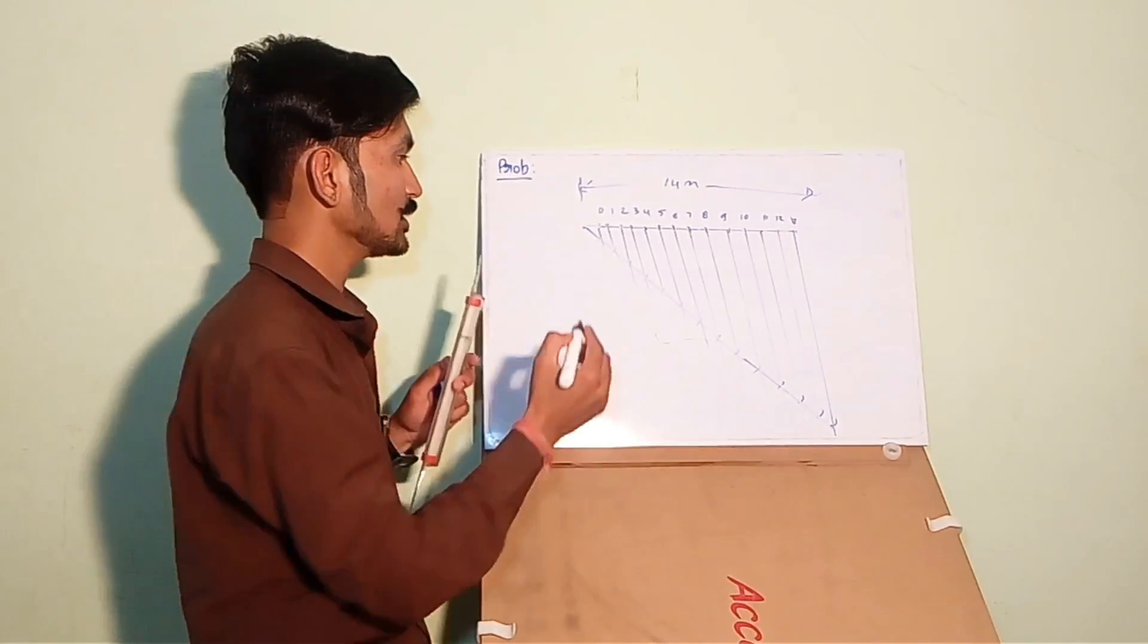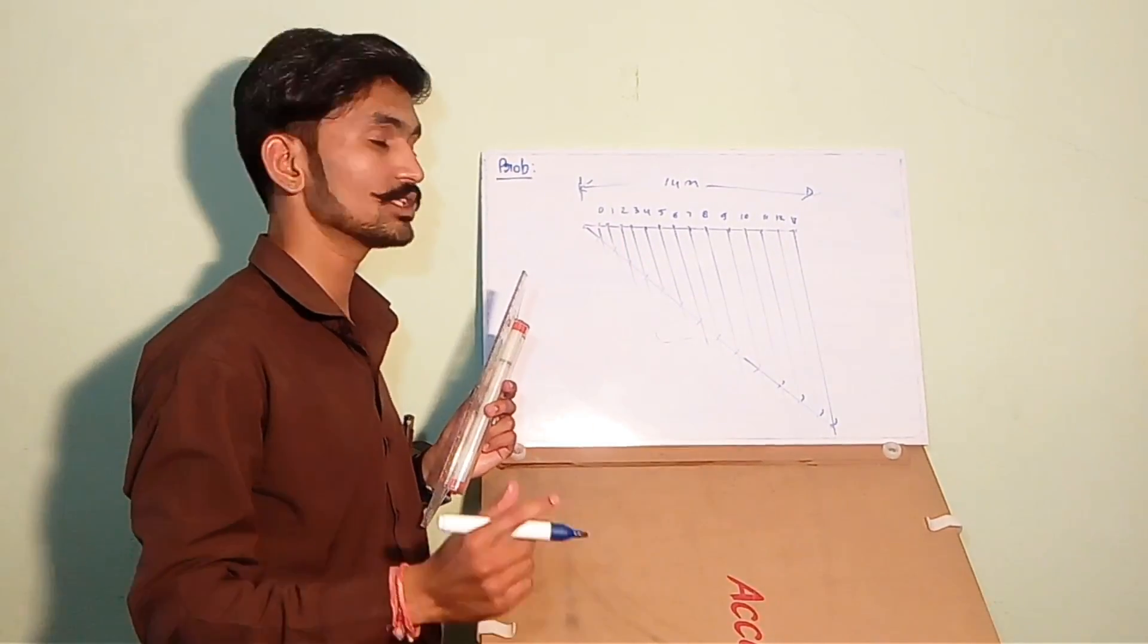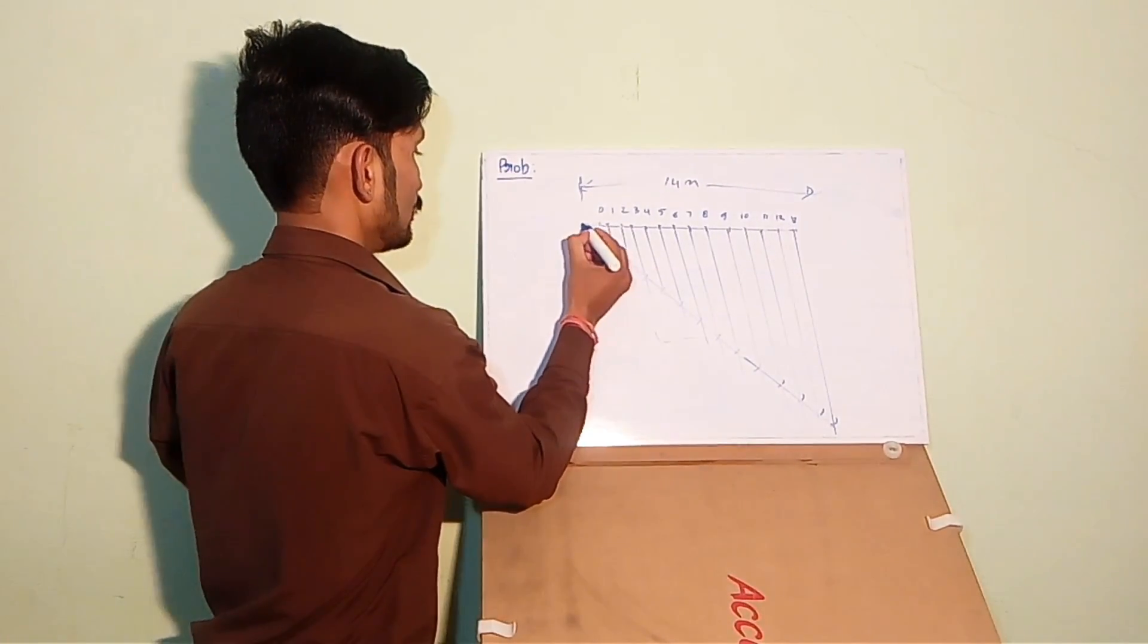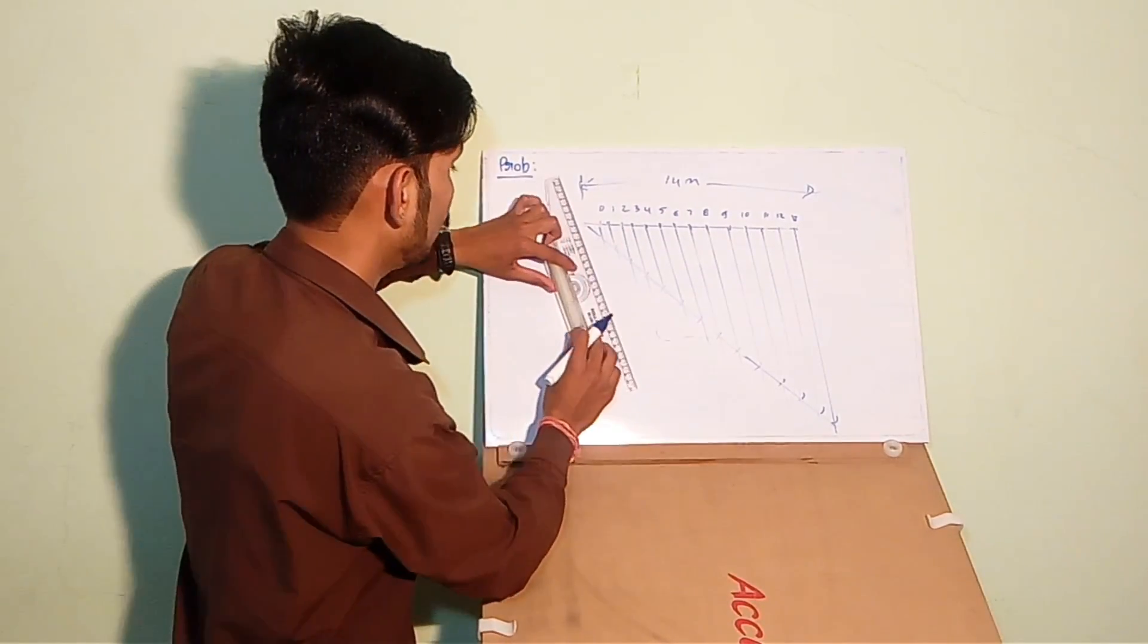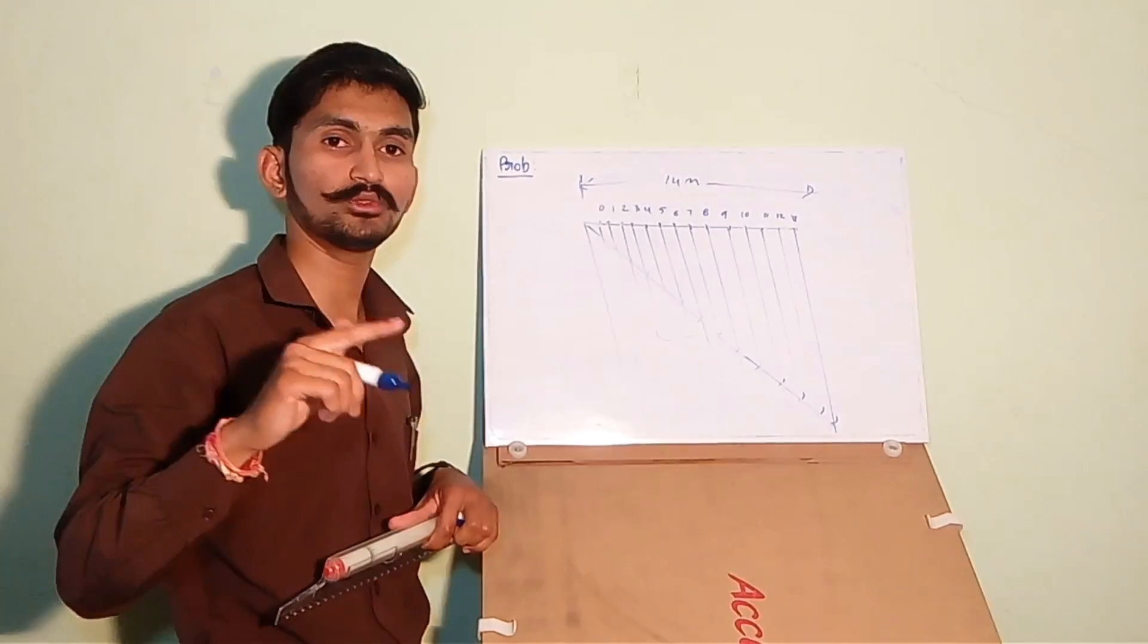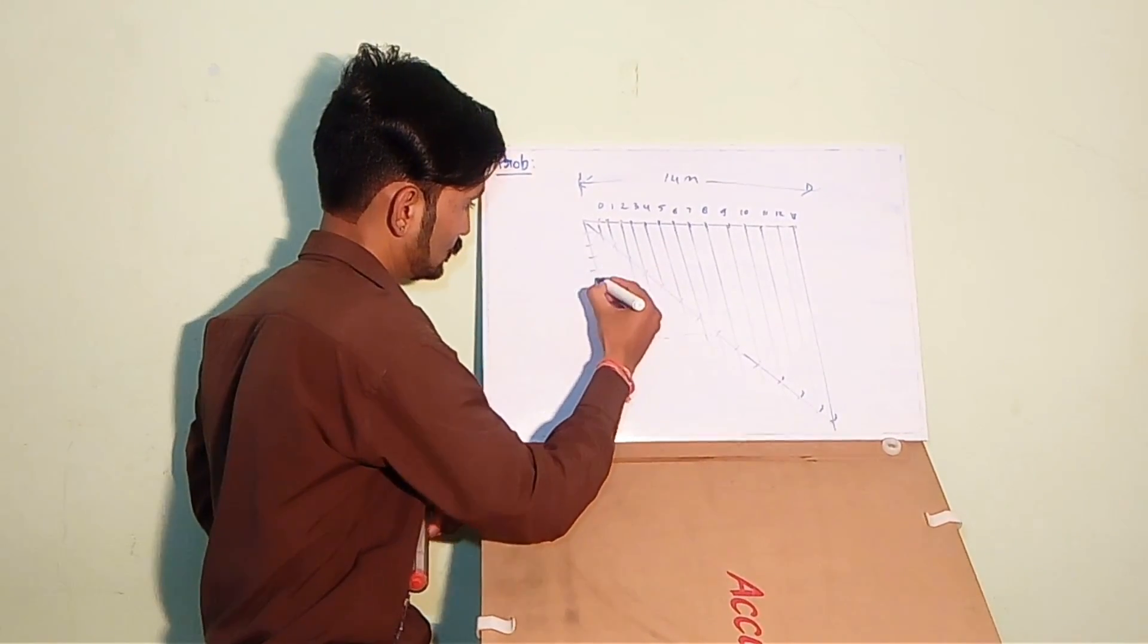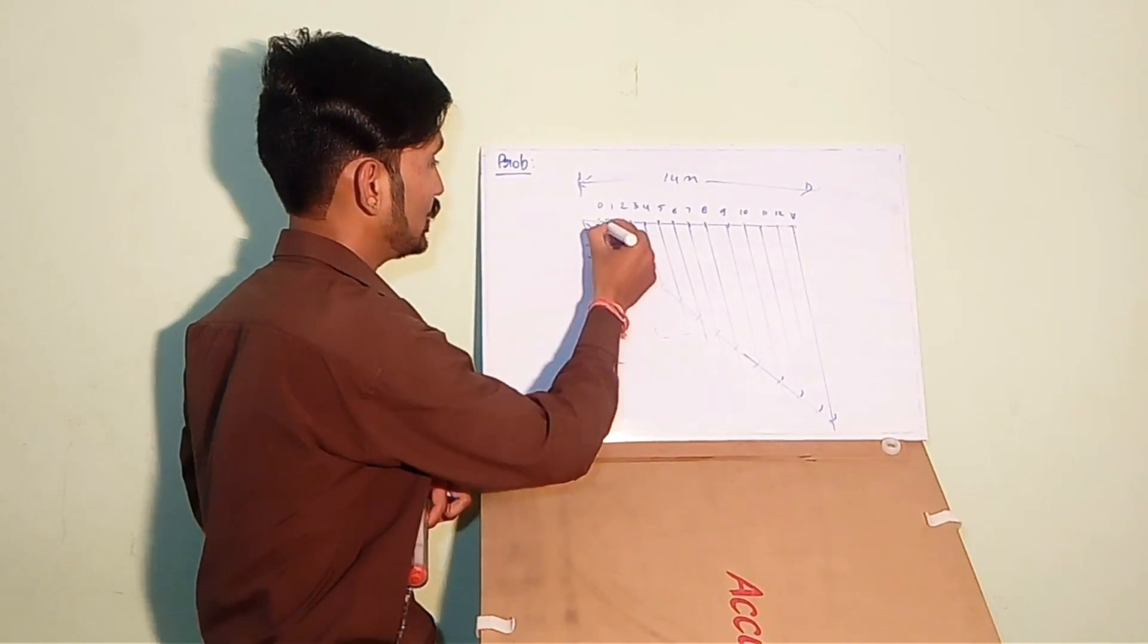To show decimeters, we have to divide this segment into 10 equal parts because 1 meter equals 10 decimeters. For dividing this part into 10 equal parts, again draw a line from the same point at a random angle and divide this line into 10 equal parts: 1, 2, 3, 4, 5, 6, 7, 8, 9 and 10.